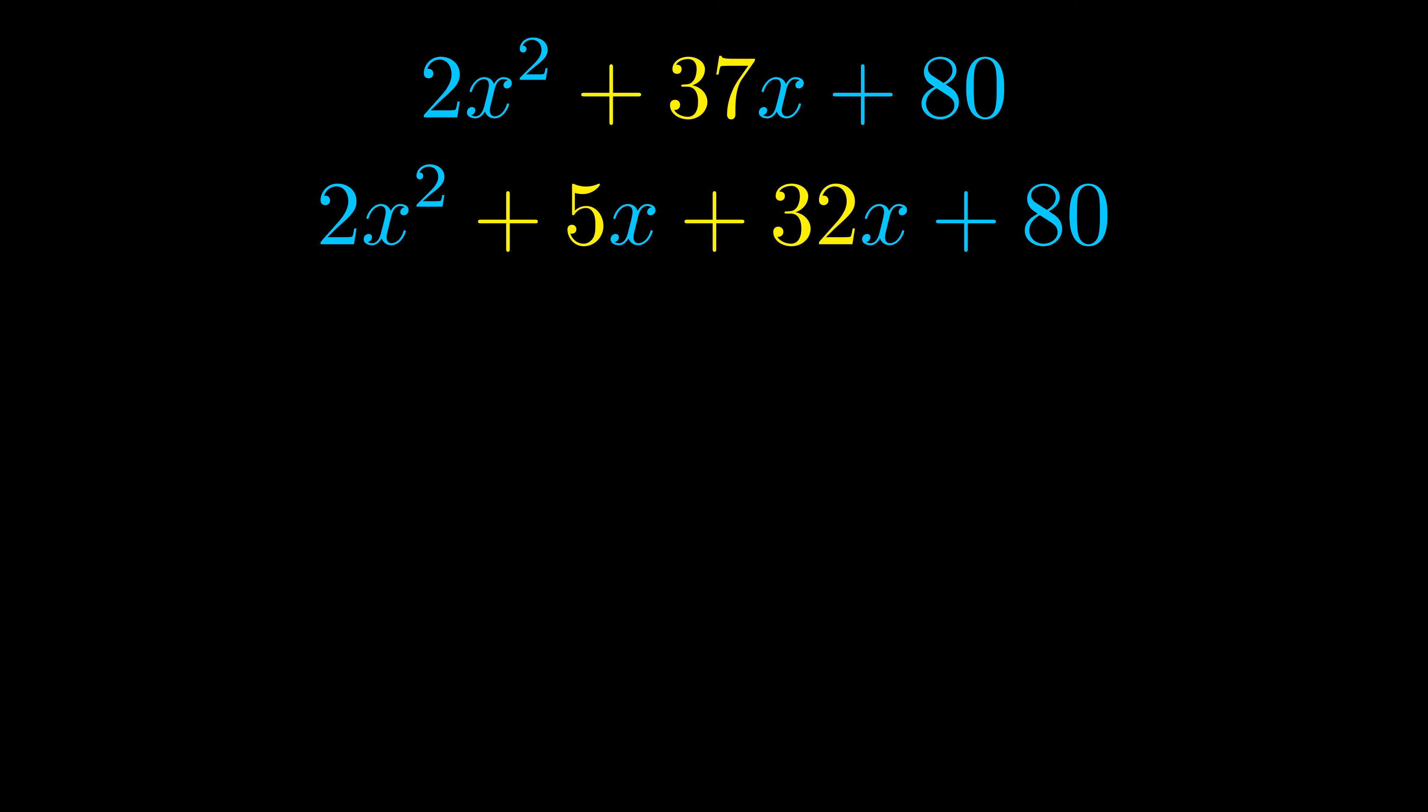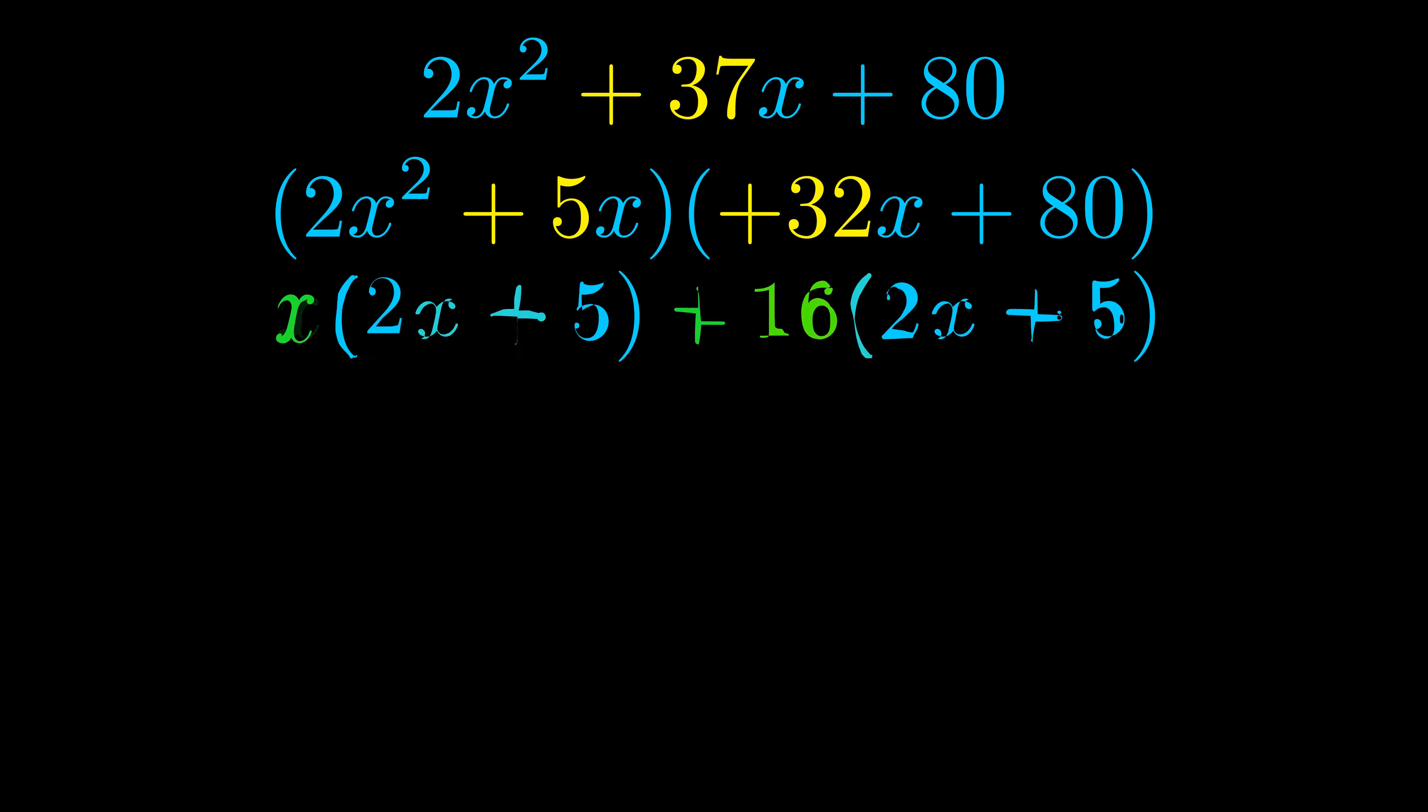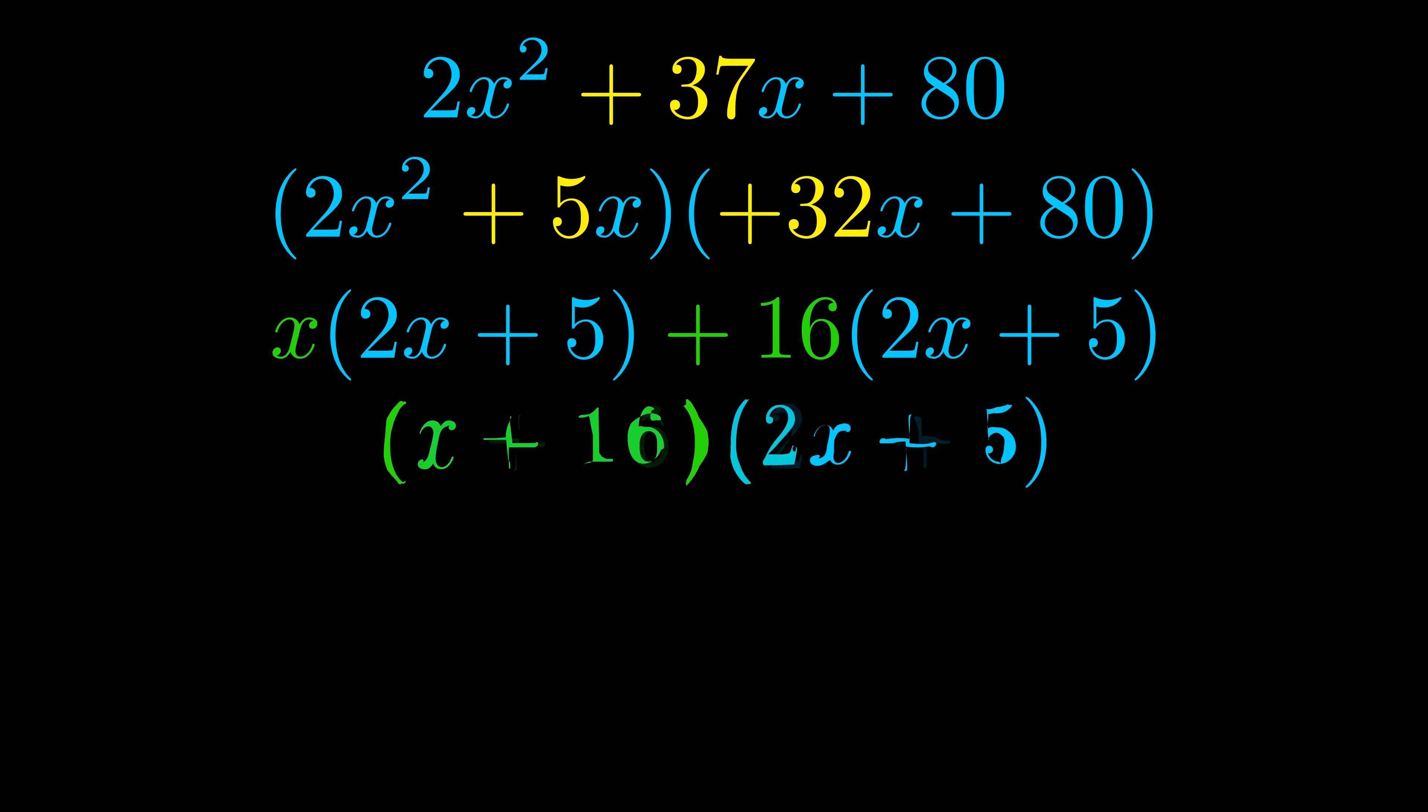Once we've done this we put parentheses around the first term and the last term so that we can take the greatest common factor out of both terms. We can see the greatest common factor is now outside in green. Notice also how what remains inside of the parentheses is the same in both cases. The blue values are the same.